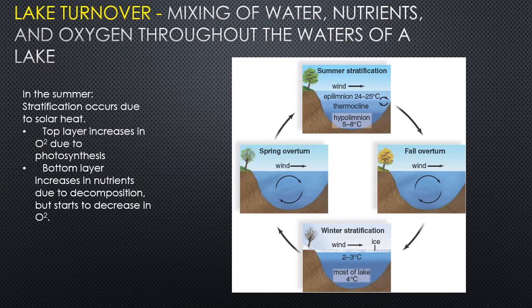The top layer of a lake is warm — those top six inches are nice and warm while everything underneath is chilly. That top layer increases in oxygen because of all the photosynthetic organisms living there. So in summer the top layer is oxygen-rich, and the bottom layer increases in nutrients as organisms die, sink, and decompose.